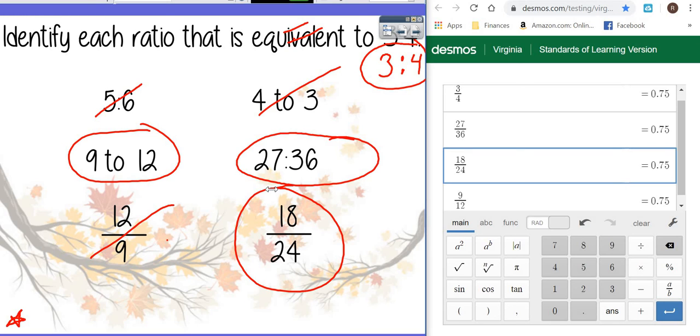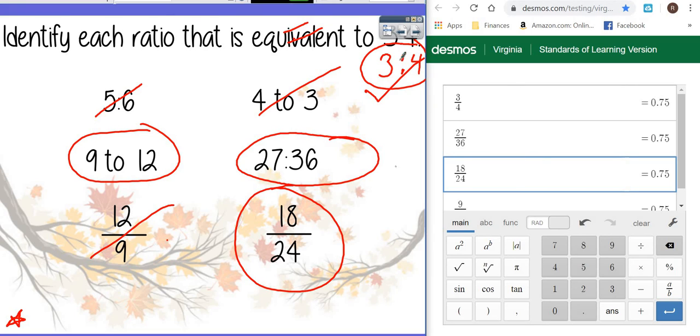We have three that are equivalent to the ratio three to four. Sorry about all the announcements guys. So whenever you're trying to find out if things are equivalent just put them in the calculator as fractions and see if their decimal values match.